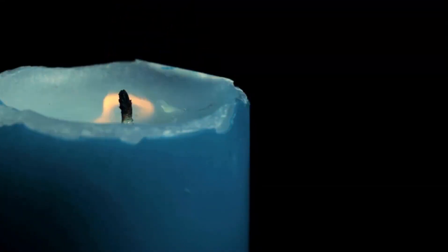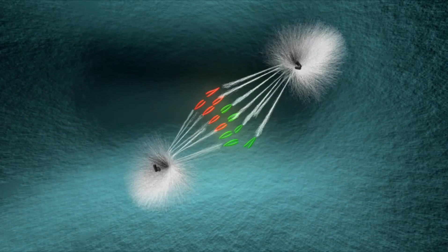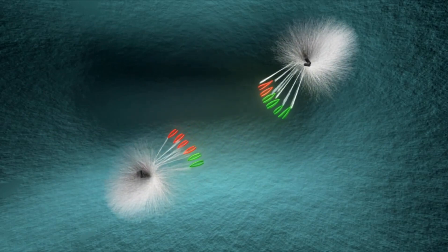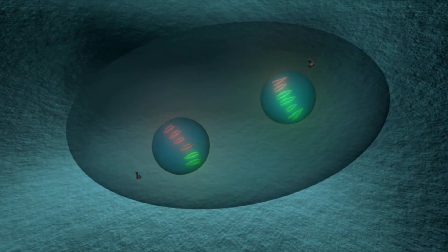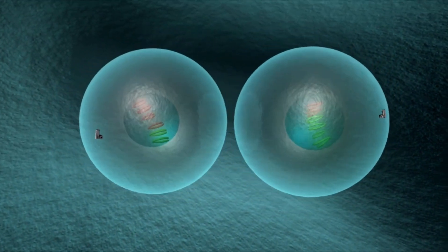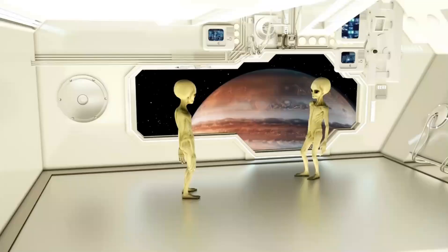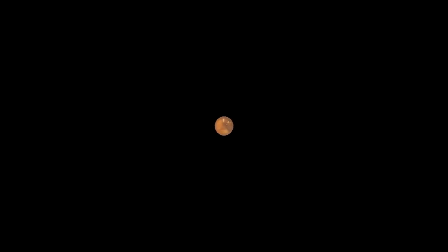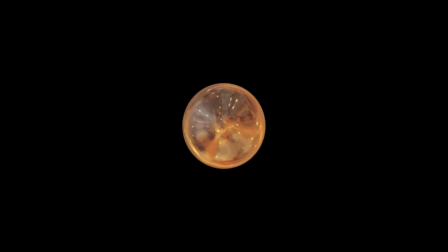Imagine the shock when scientists discover that Pluto isn't lifeless after all. It has an underground volcanic ocean and even the building blocks of life, hidden from us all this time. What could this mean for the search for life beyond Earth? Could the cold, distant world of Pluto hold the key to understanding life in the most unexpected places?